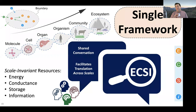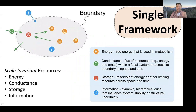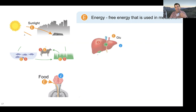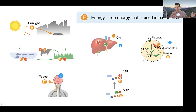We asked: can we come up with four resources that exist at each one of these six spatiotemporal scales? The four resources we came up with that we thought were pretty general were energy, conductance, storage, and information — which we call ECSI. Energy, I think everyone would agree, is important to life sciences at all scales: energy from the sun, energy from trophic levels. Each organism needs to eat something for the energy to do what it needs to do. Each organ needs energy; energy limits metabolic processes.